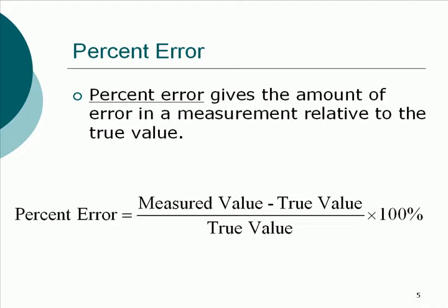You've still got a base, a rate, and an amount. In percent error problems, what is your base? It's your true value. What is your amount? It's the change — some part of the true value — and the percent is our rate. Let's take a look at an example.